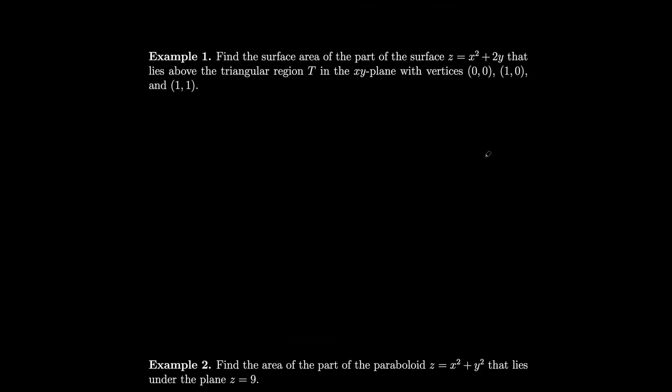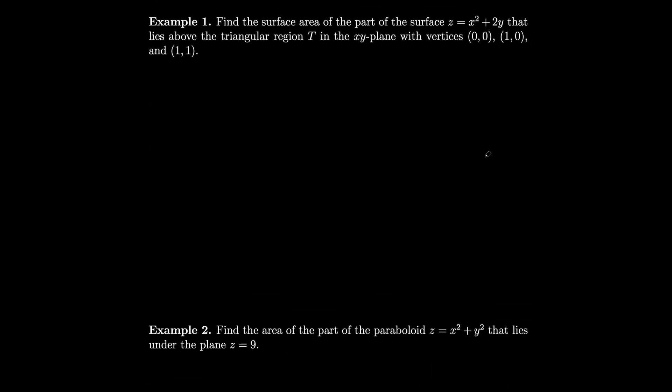So how about we do some examples. Let's see if we can find the surface area of the part of the surface z equals x squared plus 2y, that lies above the triangular region T in the xy plane with these vertices. So how about we draw this region? So this is what we're going to integrate over. We have the origin as one of the vertices. We have 1, 1 and 1, 0. So get this nice triangle over here. So here's 1, 1, and here's 1, 0. And we can call this triangle T.